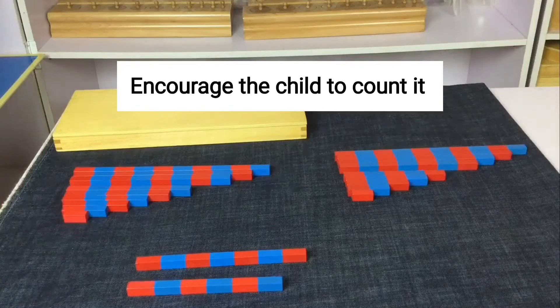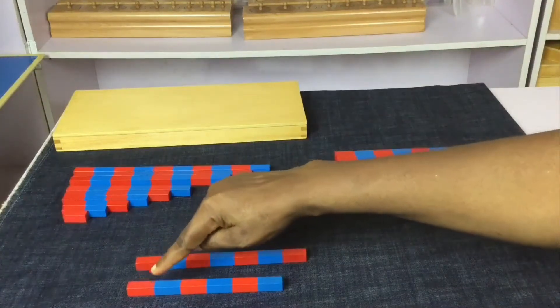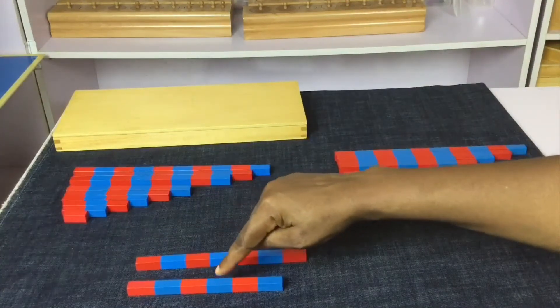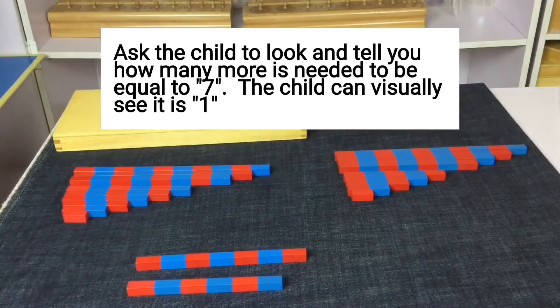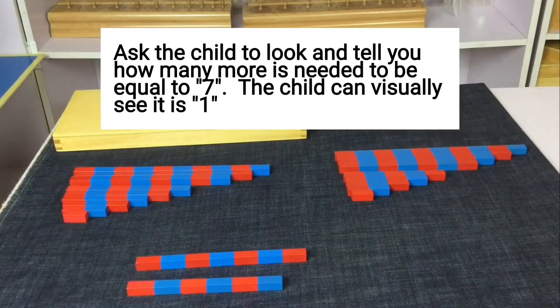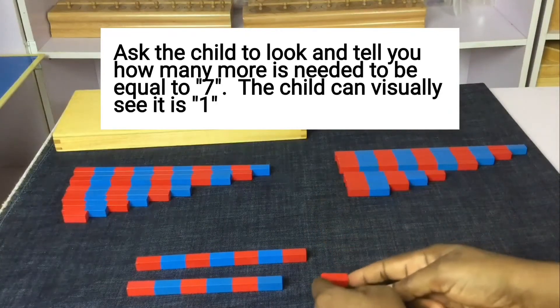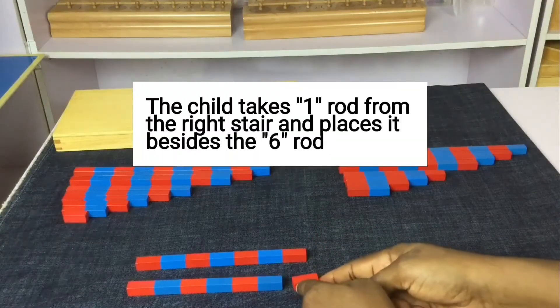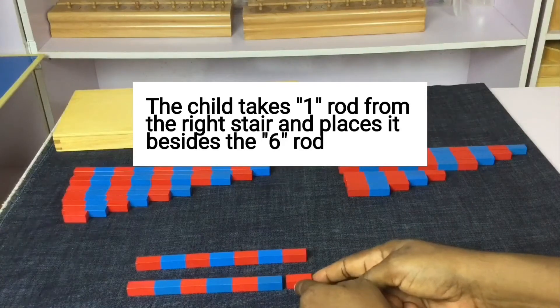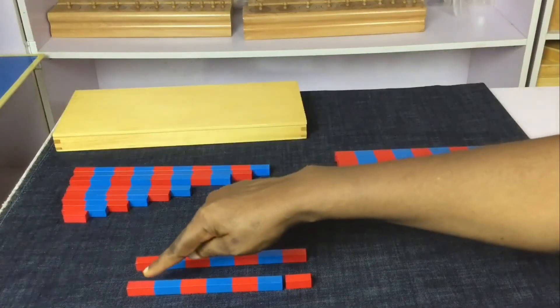Encourage the child to count it. Ask your child to look and tell you how many more is needed to be equal to 7. The child can visually see it is 1. The child takes one rod from the right stair and places it beside the 6th rod.